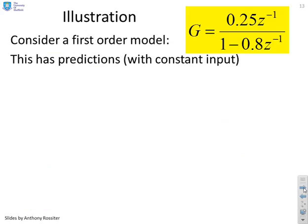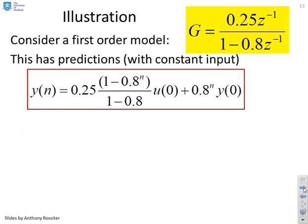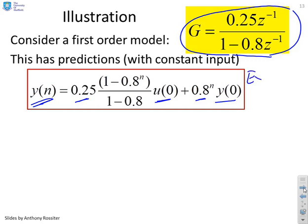So an illustration. We're going to take a first order model, and with this first order model I can write down the predictions explicitly. So here they are. The predicted value n samples ahead is going to be 0.25 times 1 minus 0.8 to the power n over 1 minus 0.8 times whatever value I've selected for you, plus 0.8 to the n times y of 0. And that's fairly easy to derive if you have a first order model. And that's one of the nice things about PFC. If you make simple assumptions, you can write explicit algebra that's easy to derive and easy to code.